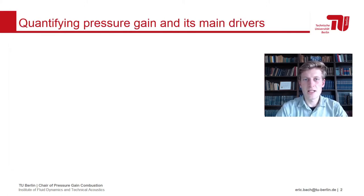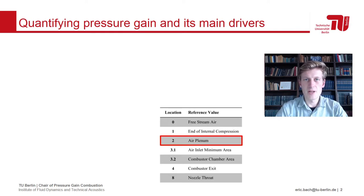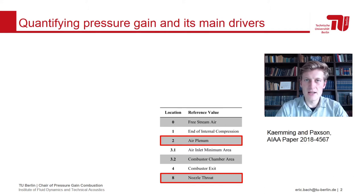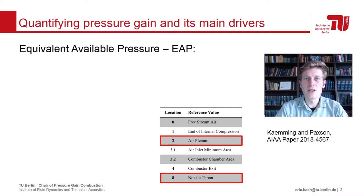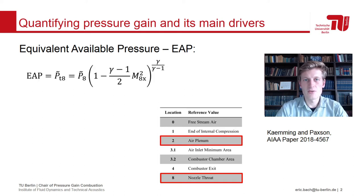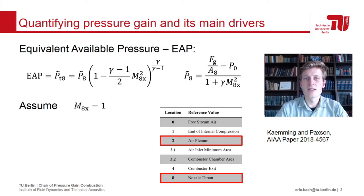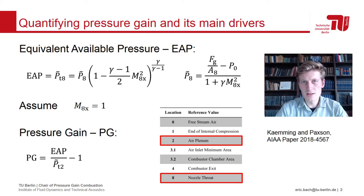Quantifying the actual gain in stagnation pressure from the air plenum to the exit throat and identifying its main drivers is paramount to assessing and comparing the performance of RDC designs. Kemming and Paxton therefore proposed a method based on equivalent available pressure, or EAP, which uses isentropic relations to obtain the stagnation pressure from thrust measurements. Assuming that the RDC outlet is, on average, choked over one detonation cycle, the pressure gain can be expressed simply as the ratio of EAP to plenum pressure.